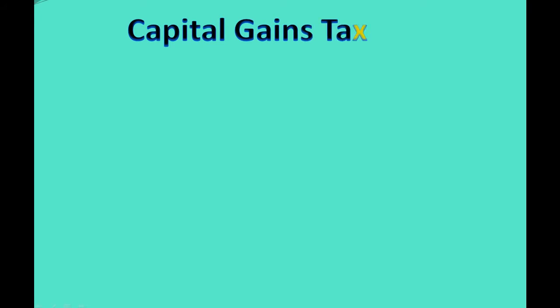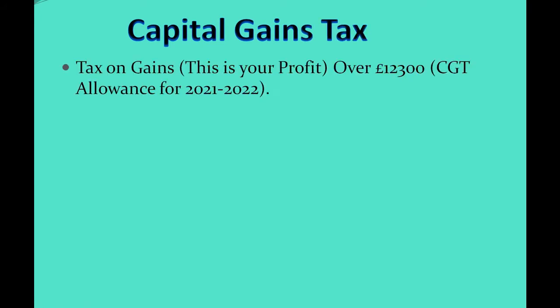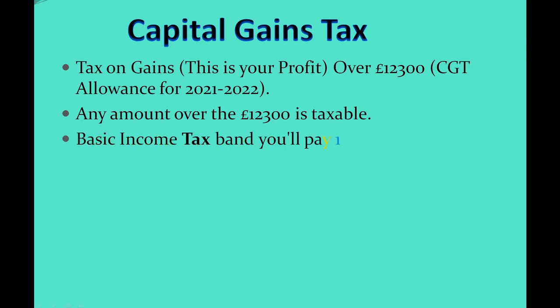Next up, we'll be having a look at capital gains tax. This is tax on the gains that you make — the profits after you are selling your stocks and shares. For the year of 2021 to 2022, our tax-free allowance is £12,300. Any amount over that is what we need to pay tax on. If you make less than £12,300 in gains, you don't need to worry about paying tax for that specific year. The amount of tax you pay — 10% or 20% — depends on your basic income tax band.